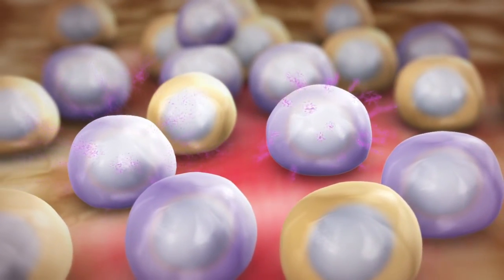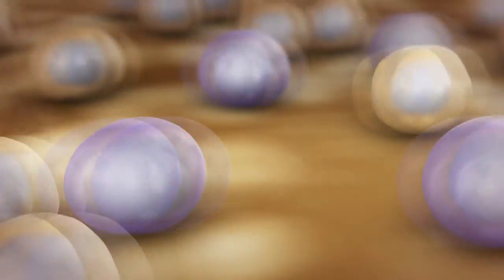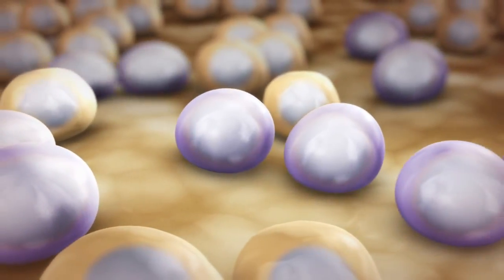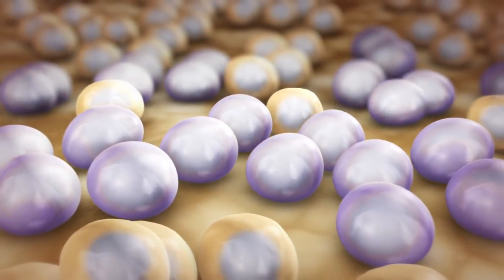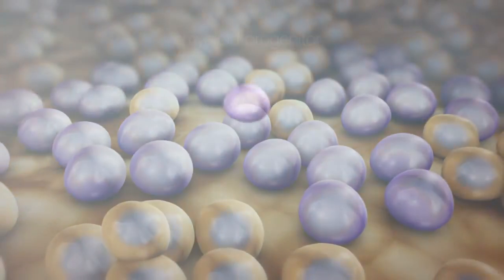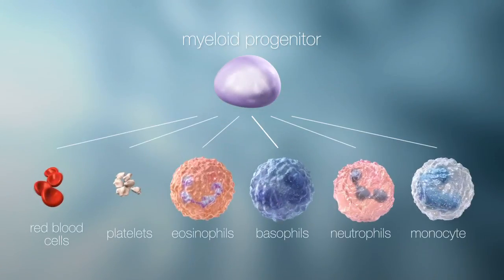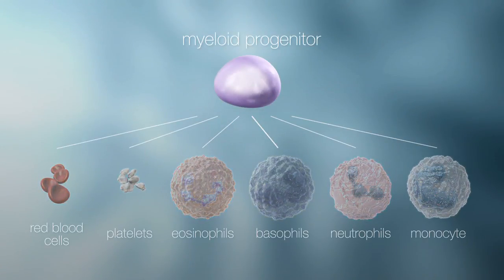Cancer cells induce inflammation in the surrounding tissue creating a favorable tumor environment. Cell division is now unrestricted and furthermore immature cells lose their ability to develop into specialized cells.